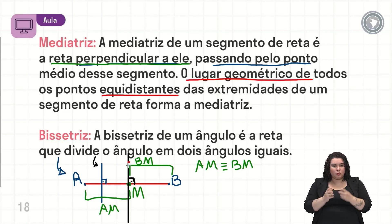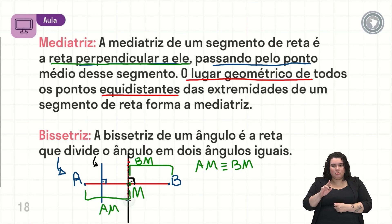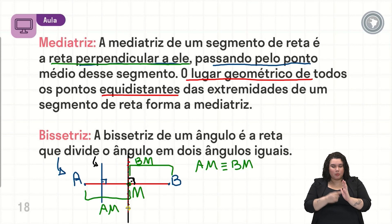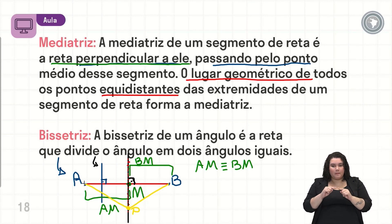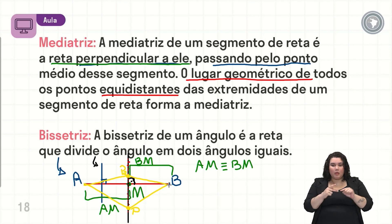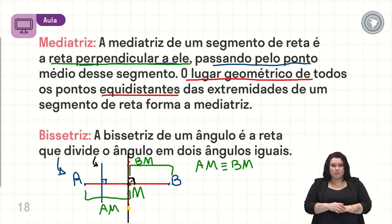Essa reta que nós já sabemos que é a mediatriz é formada por infinitos pontos. Qualquer ponto que pertence à mediatriz — se nós pegarmos aqui um ponto P — significa que a distância desse ponto P até B é a mesma distância do ponto P até A. Agora, se nós pegarmos um outro ponto P2, também de P2 até A e de P2 até B tem a mesma distância. É isso que está dizendo na nossa definição de mediatriz.